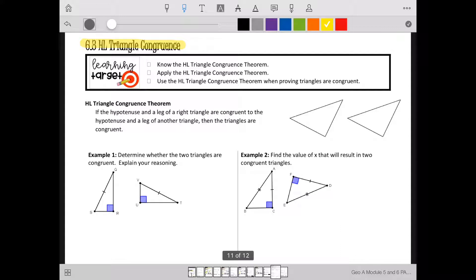The HL Triangle Congruence Theorem says that if you have the hypotenuse and a leg of a right triangle matching the hypotenuse and leg of another right triangle, then the triangles are congruent.